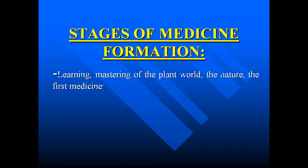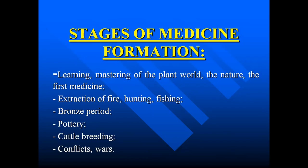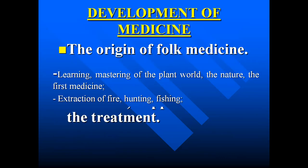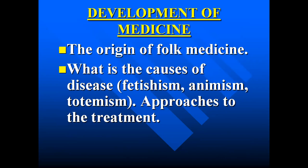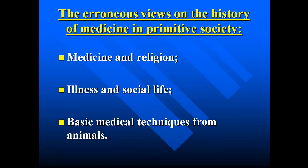The stages of medicine formation: learning and mastering of the plant world and nature as the first medicine; extraction of fire, hunting, fishing, bronze period, pottery, cattle breeding, conflicts and wars — the development of medicine. The origin of folk medicine: causes of disease included fetishism, animism, totemism, and their approaches to treatment. The erroneous views in primitive society connected medicine with religion, illness with social life, and basic medical techniques learned from animals.